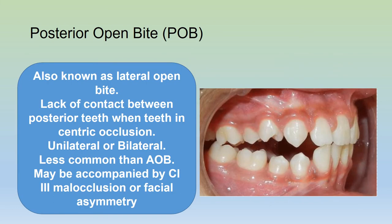Now, posterior open bite — also known as a lateral open bite — refers to the lack of contact between the posterior teeth when the teeth are in centric occlusion. Posterior open bite may be unilateral or bilateral. It is less common than anterior open bite and is usually accompanied by a Class III malocclusion or facial asymmetry.